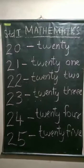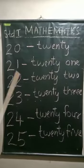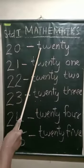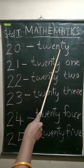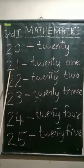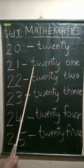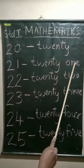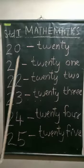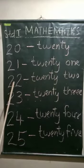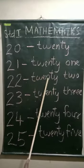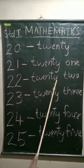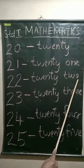Now, let us read the number name also. 20, twenty. 21, twenty-one. 22, twenty-two.